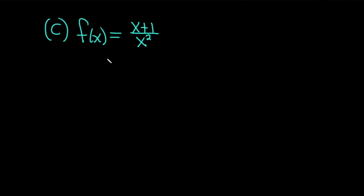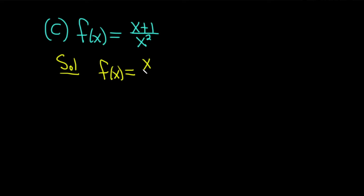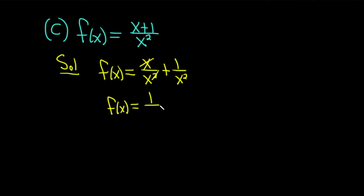Part c: f of x equals x plus 1 over x squared. In this example, we also have a quotient. However, we're not going to use the quotient rule, because we have a single term on the bottom. So whenever you have a single term on the bottom, it's usually a good idea to try to break it up. We're going to write this as x over x squared plus 1 over x squared. That simplifies to 1 over x plus 1 over x squared. We want to reach a point where we can differentiate easily.